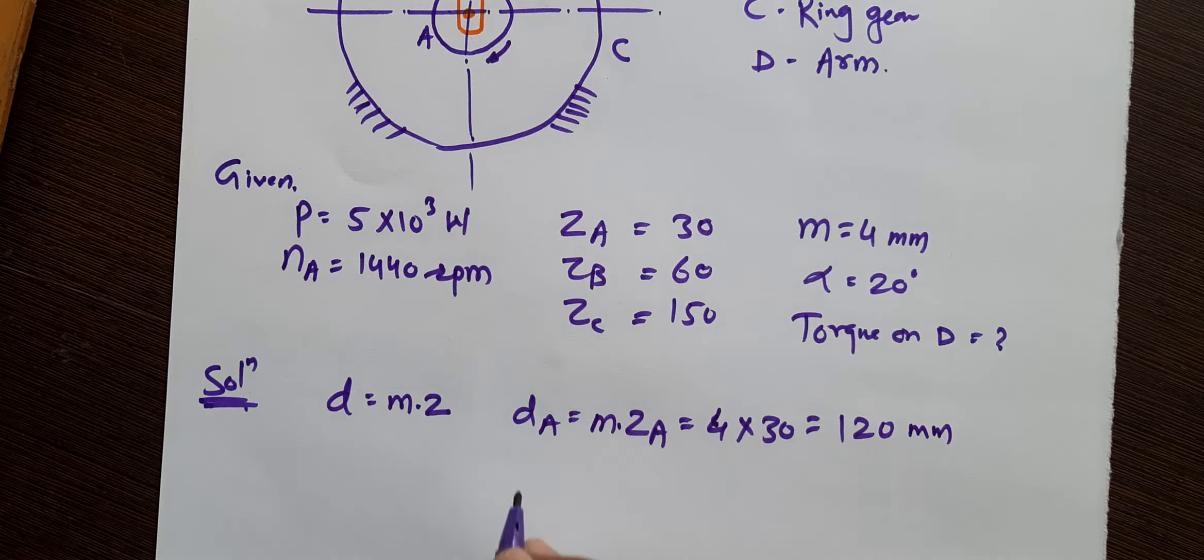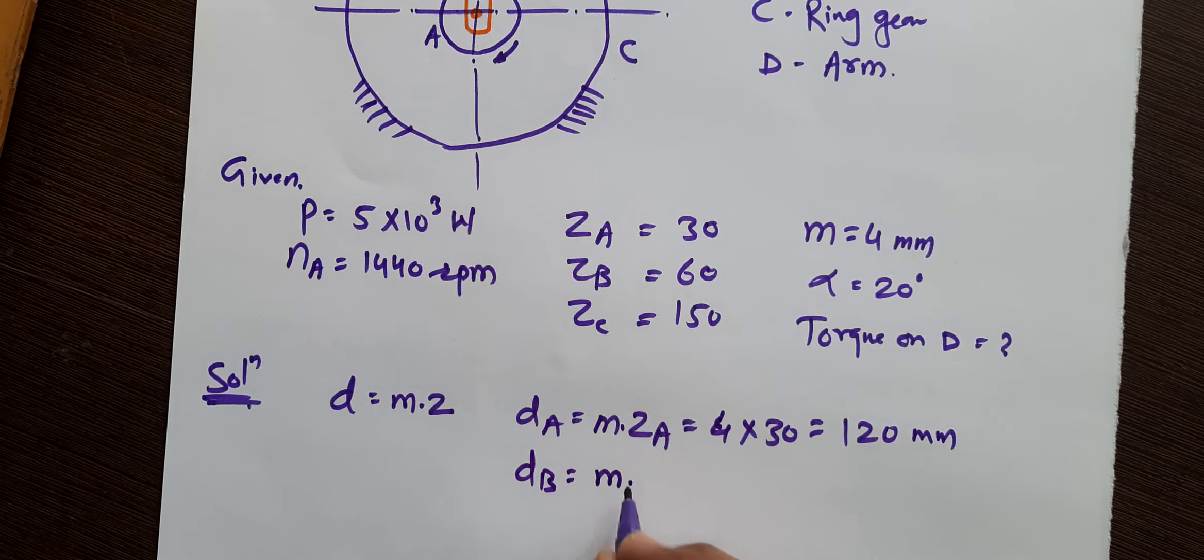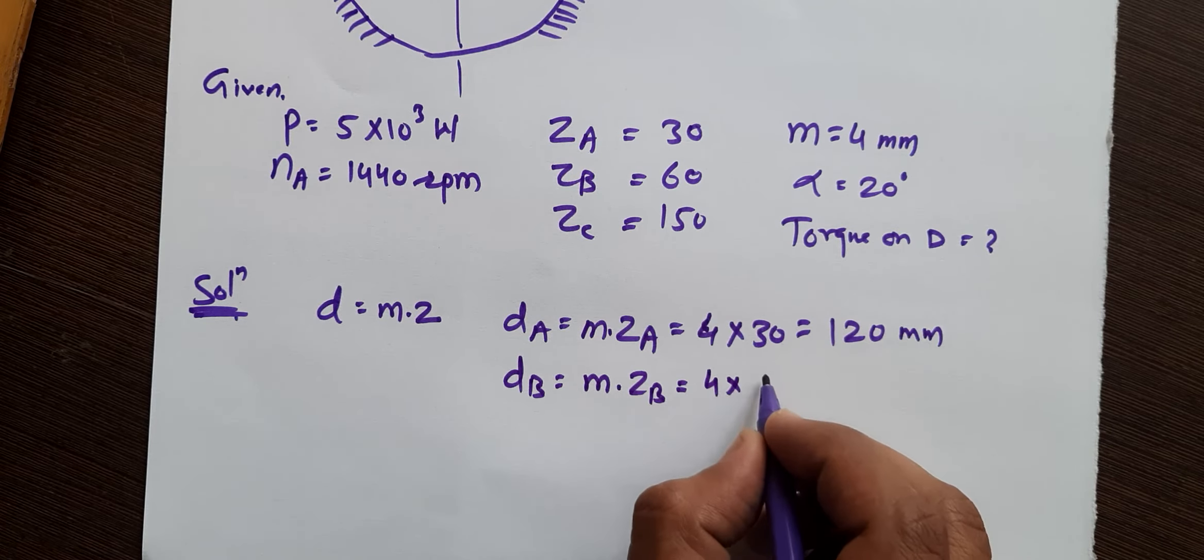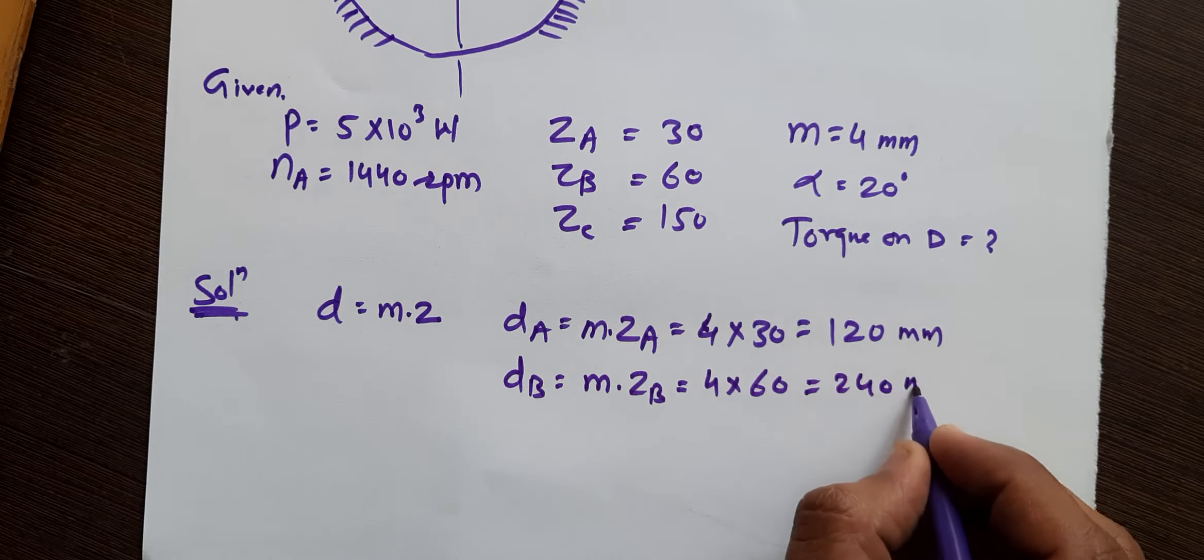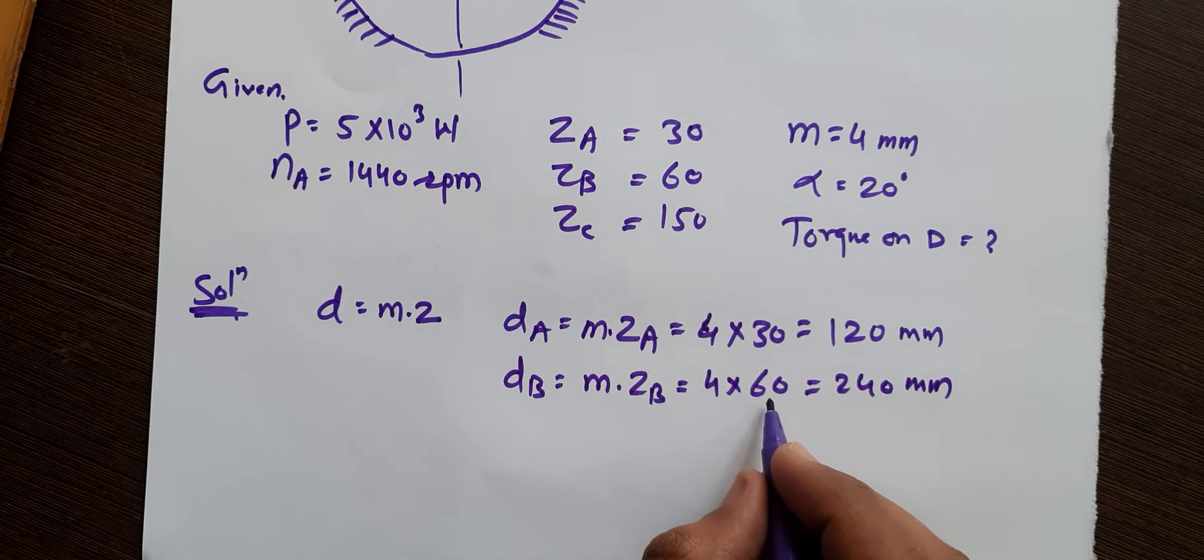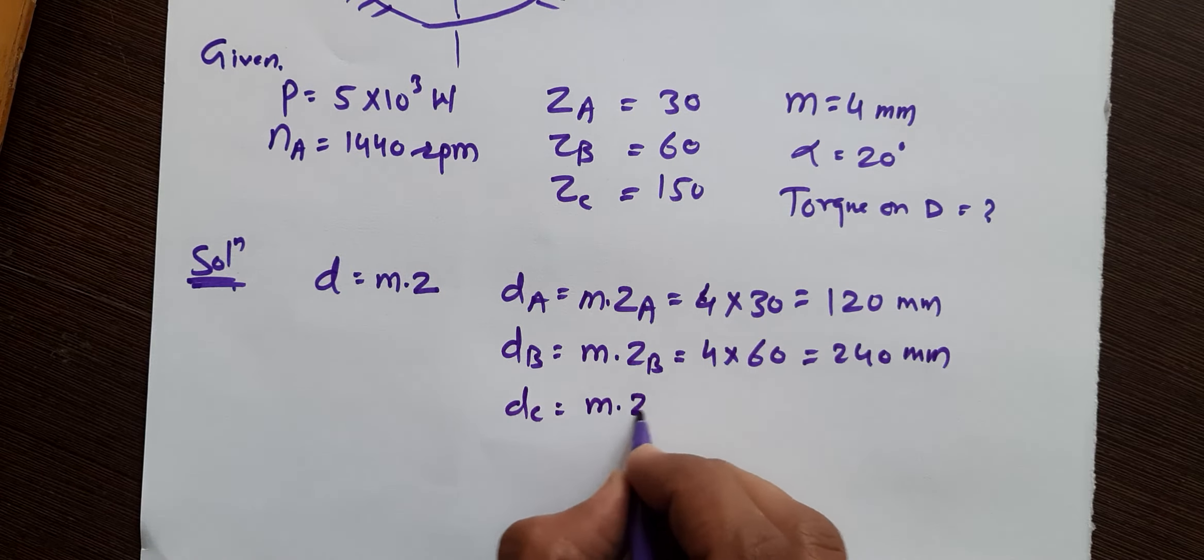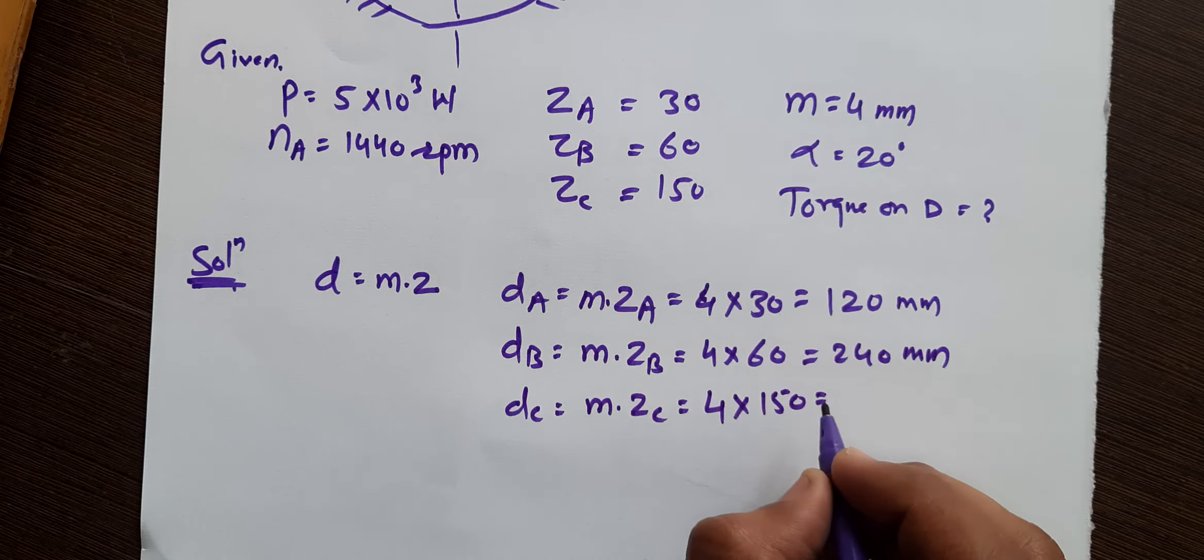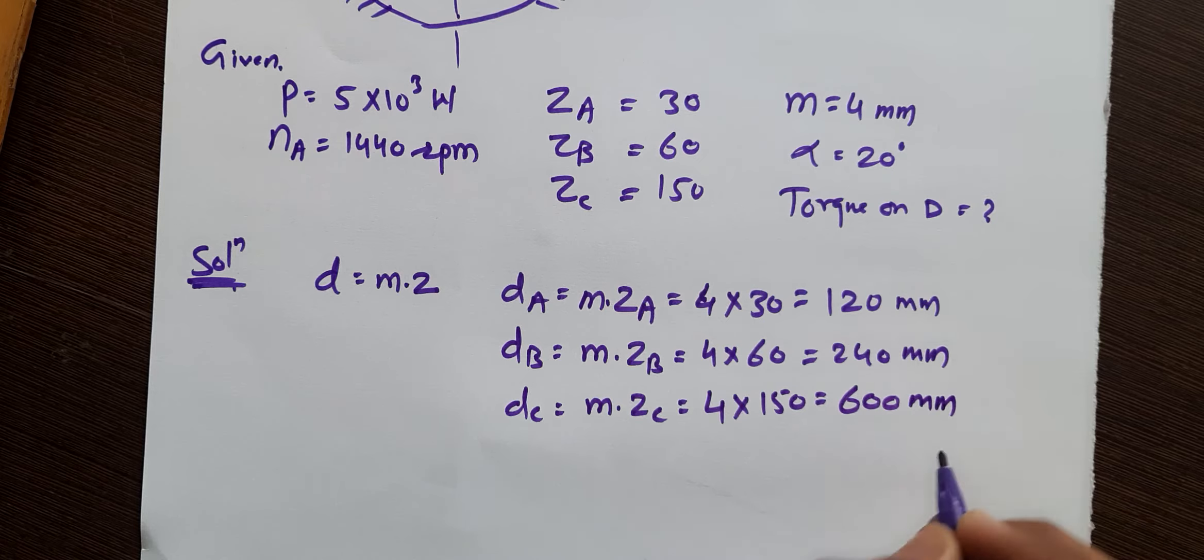Then similarly DB = M × ZB = 4 × 60 = 240 mm. Now DC = M × ZC = 4 × 150, it is 600 mm. So these are the diameters of gear A, B, and C.